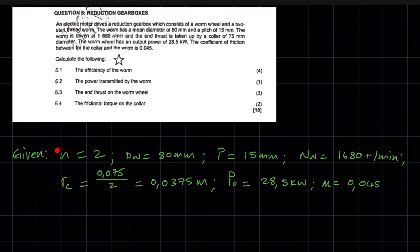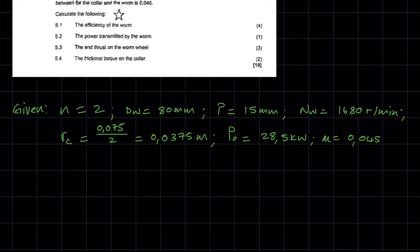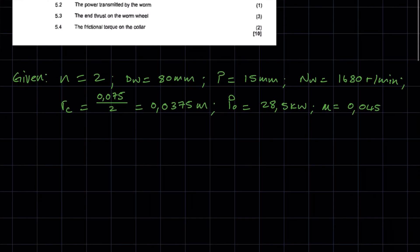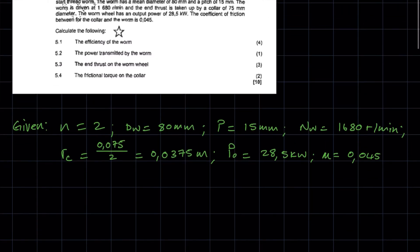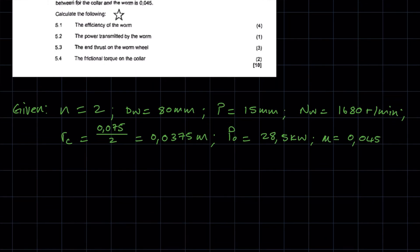From the statement, you are given the number of starts — n stands for number of starts. We are also given the mean diameter of the worm, denoted as d_w (diameter of the worm), which is 80 millimeters. We have the pitch, which is 15 millimeters. We've been given the rotational frequency of the worm — 1680 revs per minute. We are also given the diameter of the collar, which suggests we are going to calculate the frictional torque.